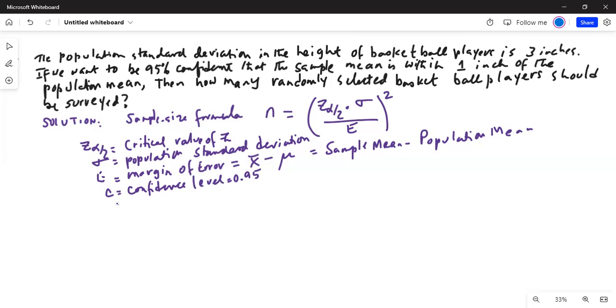Alpha is the significance level; it's the complement of the confidence level. So alpha is 1 minus c, which is 1 minus 0.95, equals 0.05 in this case.